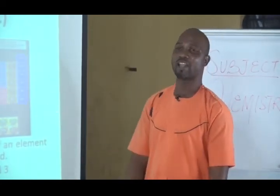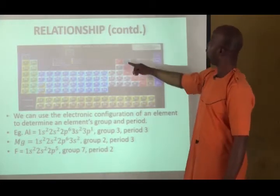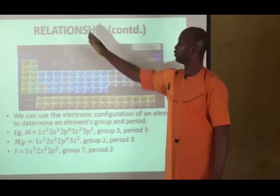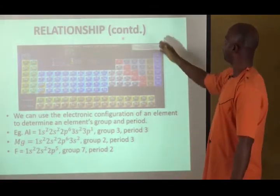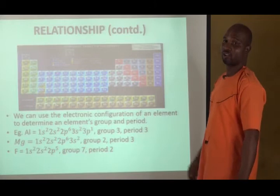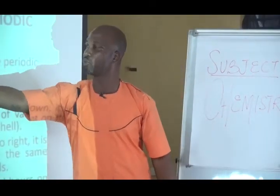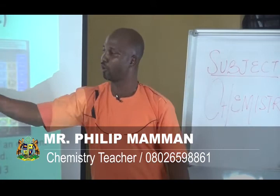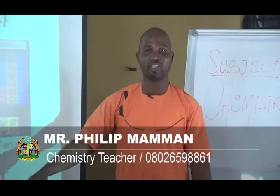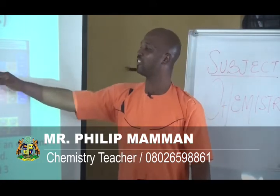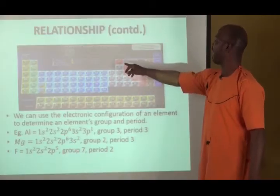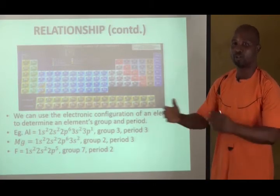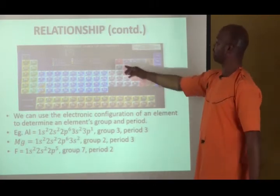I will show you the periodic table and how these relationships exist. From top to bottom is called a group — that is why elements are grouped into group 1, group 2, group 3, group 4, group 5, group 6, group 7, and group 8. From left to right is called a period, also known as a row. Elements on the same period have the same number of shells. You can appreciate the elements highlighted in red color — they are diagonally related, showing comparable sizes, which affects some of their properties.